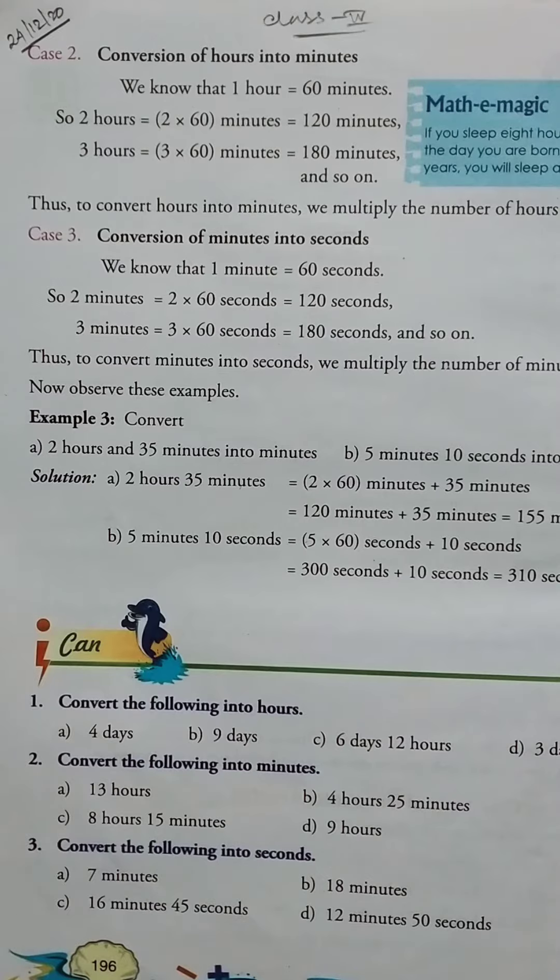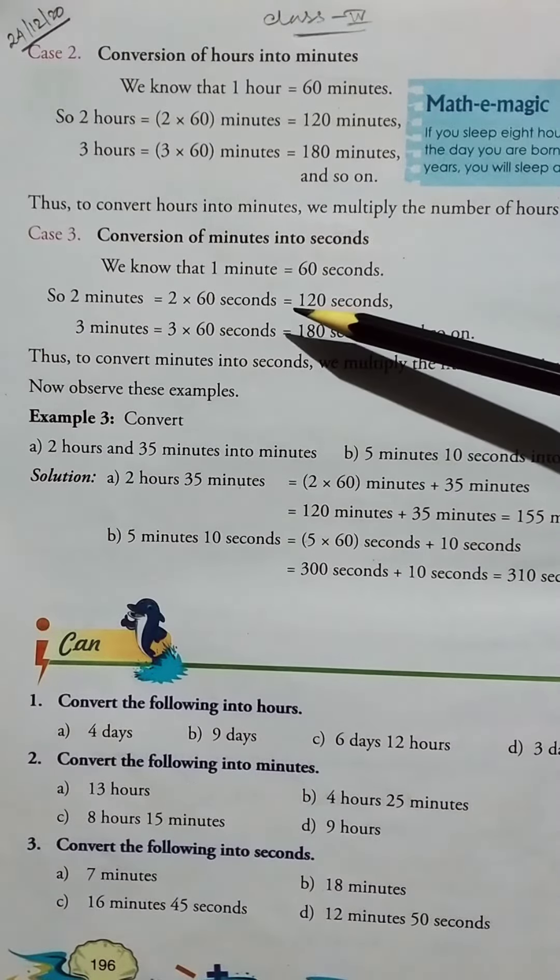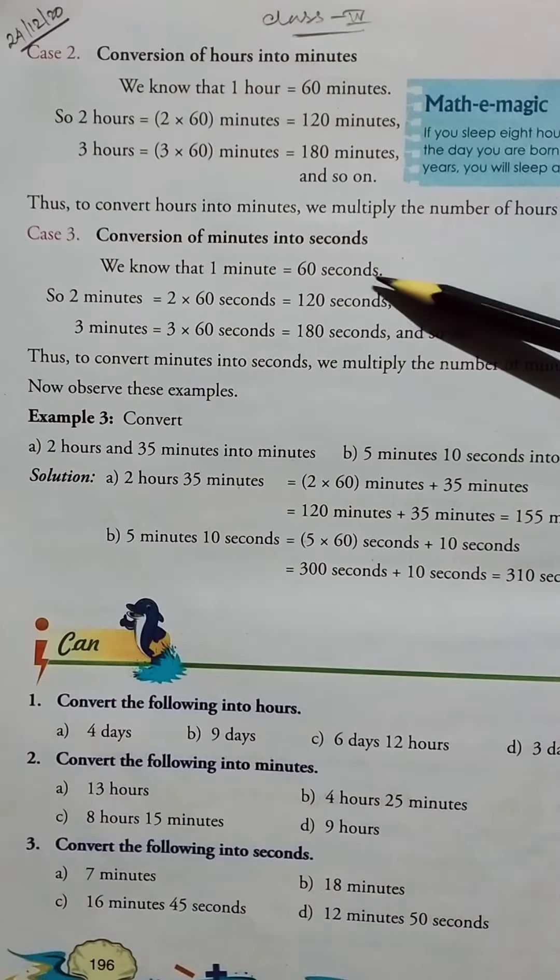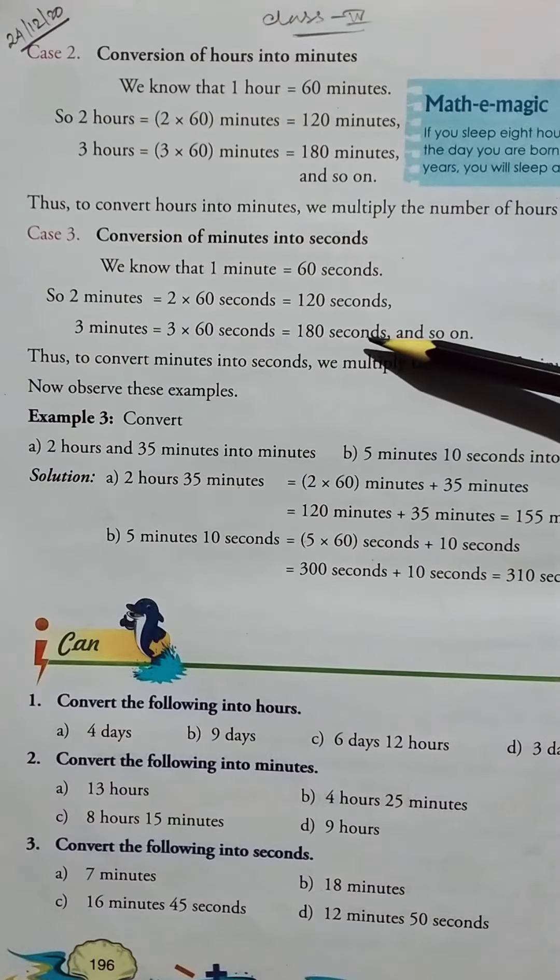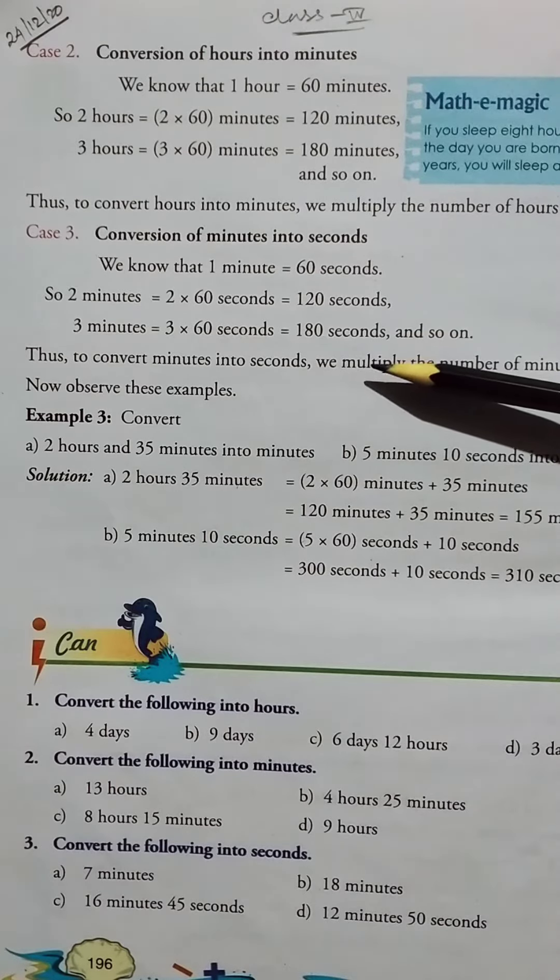Case 3: Conversion of minutes into seconds. We know that 1 minute equals 60 seconds. So 2 minutes equals 2 into 60 seconds, which is 120 seconds.